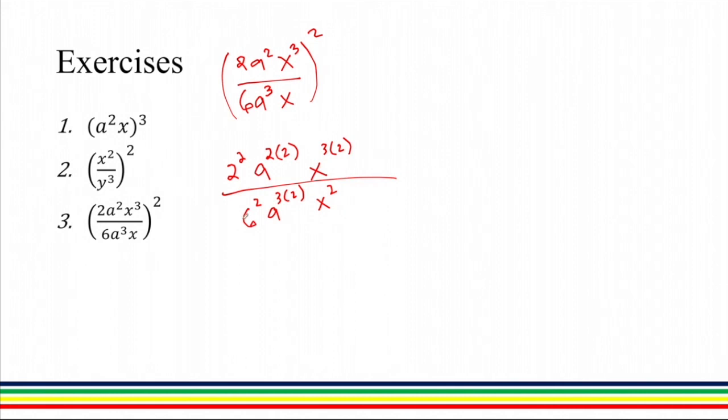And let's simplify. We have 4a. So from the index laws, if we have 2 exponents, we can just multiply this. We have 2 times 2. We have 4x raised to 6 over 36a raised to 6x raised to 2.